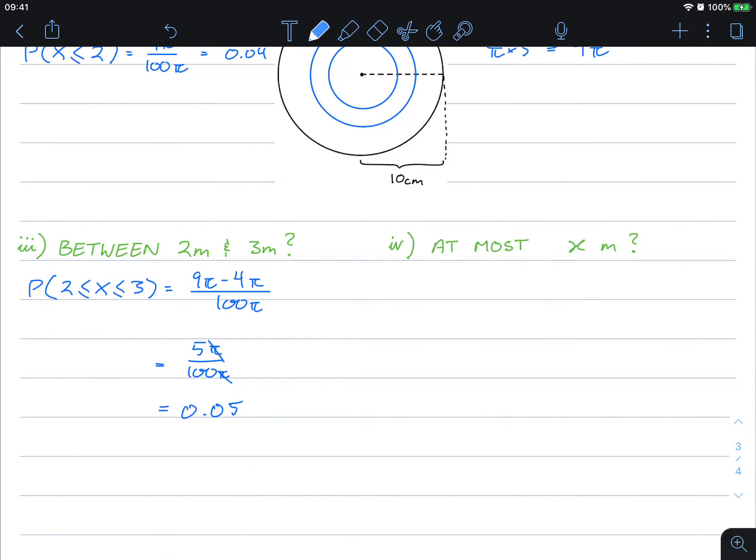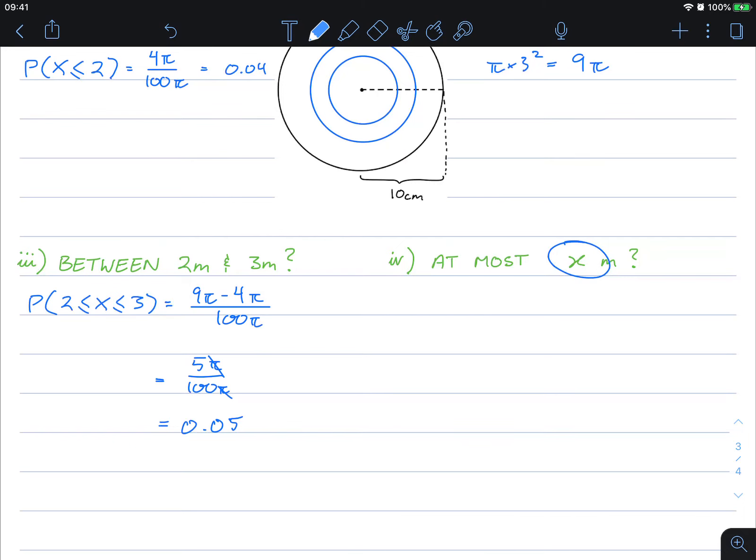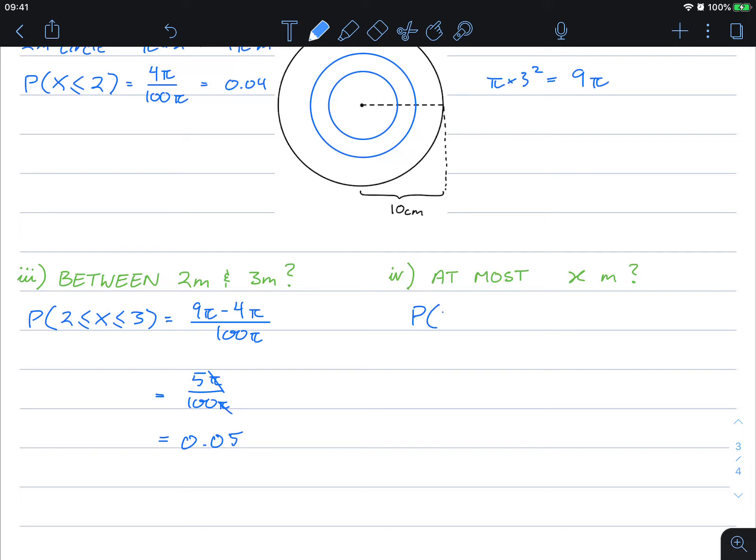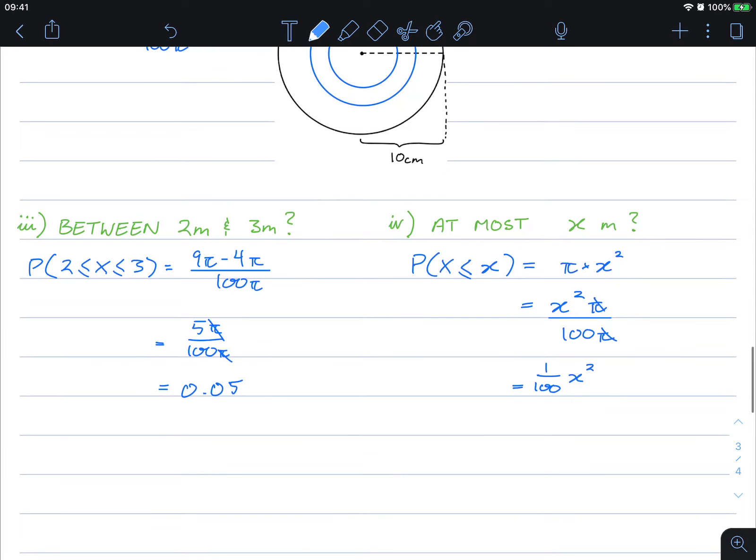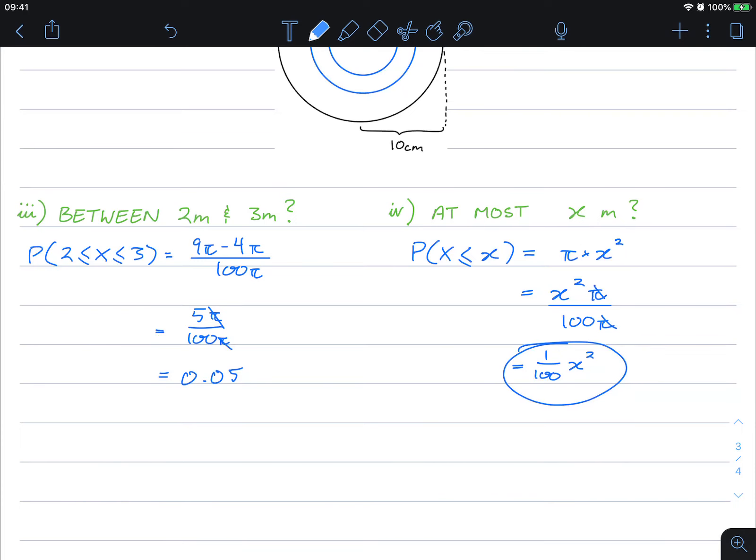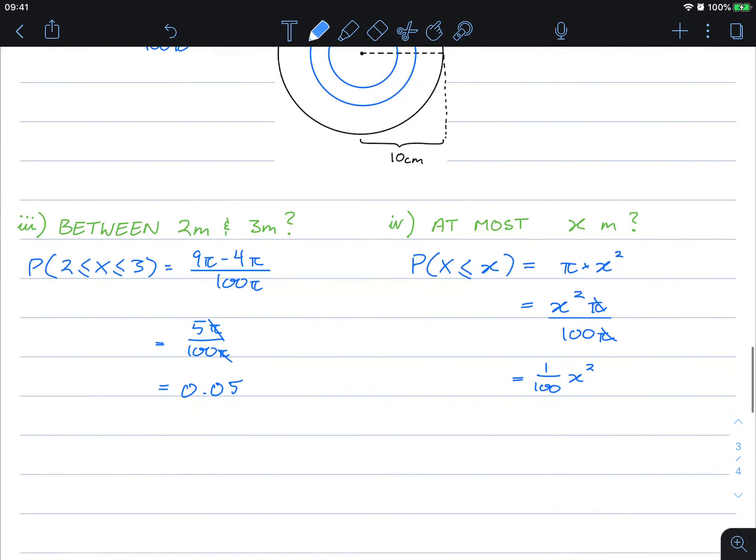Now what if it's at most any radius that we want? Well, that's the same as probability of x at most x meters, means it's less than or equal to x. That's going to be π times x squared, which is x squared π, over 100π. Canceling those two, we get 1 over 100 times x squared.